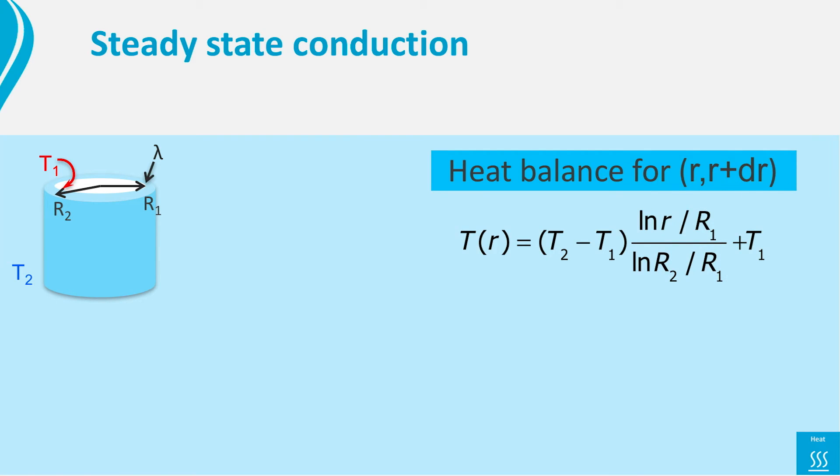Now that we have found the temperature distribution, we can also calculate the heat flow through the wall. As we see, it does not depend on the radial position in the wall. We already knew that from the microbalance, and it is good to see it confirmed here.